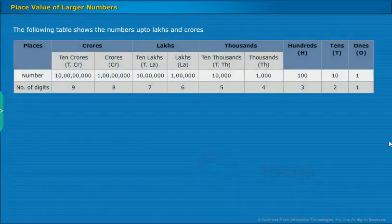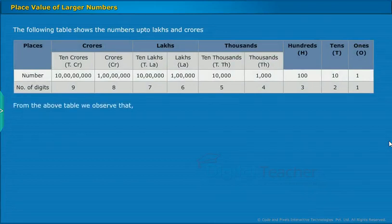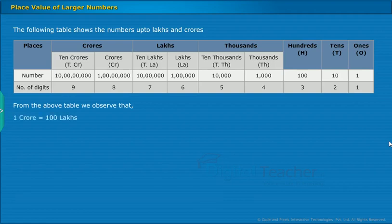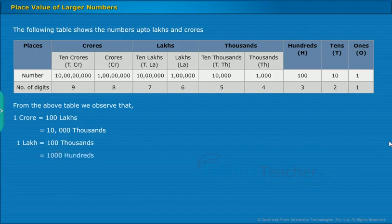The following table shows the numbers up to lakhs and crores. From the above table, we observe that 1 crore is equal to 100 lakhs, which is in turn equal to 10,000 thousands. 1 lakh is equal to 100 thousands, which is equal to 1,000 hundreds.